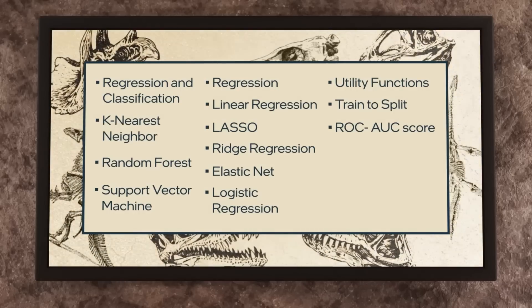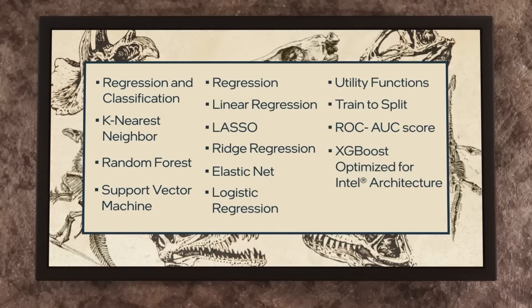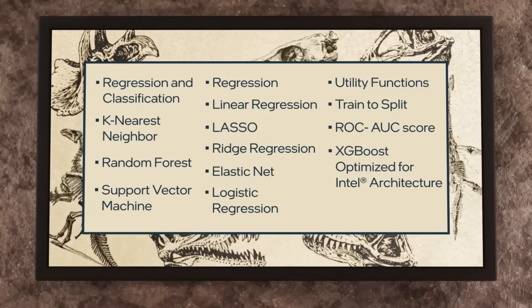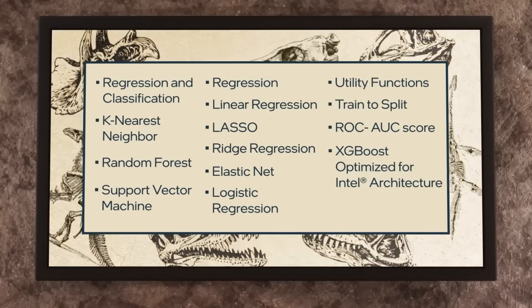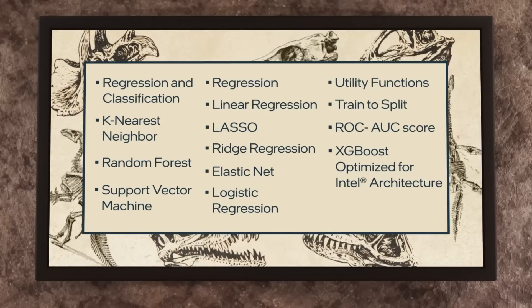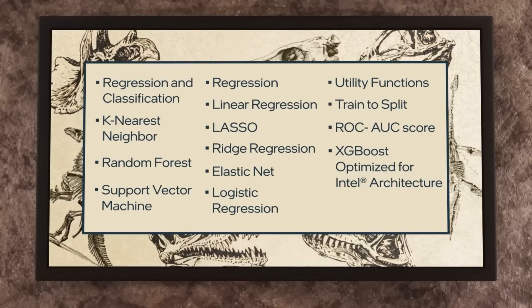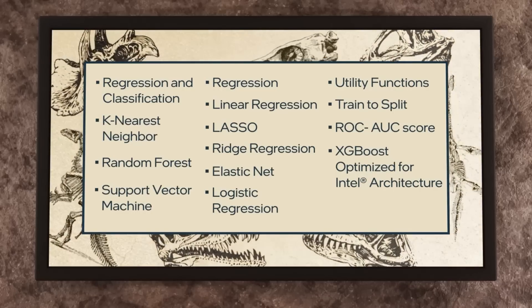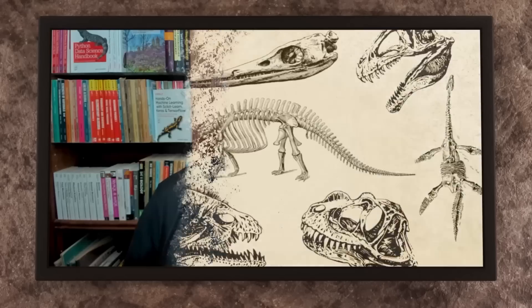This takes us to Intel-optimized XGBoost. We have an optimized version of XGBoost that runs incredibly well, and we also supply our optimizations to the maintainers of the stock version of XGBoost to ensure the best and fastest algorithms are available for their own adoption cadence. So make sure you update all your compute-intensive libraries such as XGBoost, NumPy, TensorFlow, or PyTorch, and make sure you're using the latest and greatest.